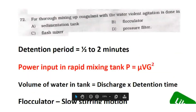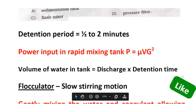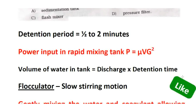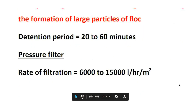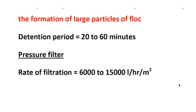Next is the pressure filter, option D. There are two types of filters: gravity filter and pressure filter. Under gravity filters, there are slow sand filter and rapid sand filter. In the pressure filter, water inside the chamber is under pressure. The rate of filtration for a pressure filter is 6,000 to 15,000 litres per hour per metre square.